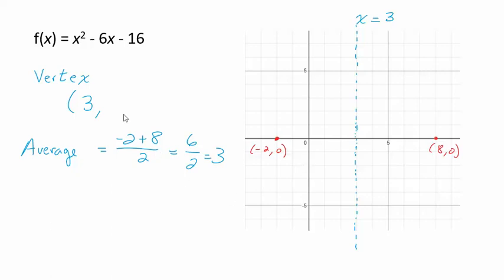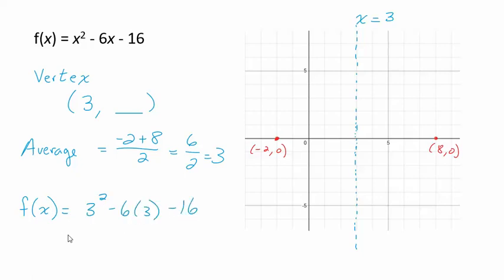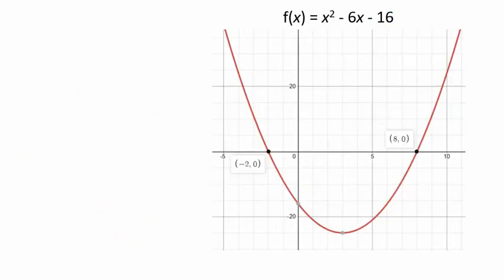Now how do we find the y-value of the vertex? Since we know the x-value is 3, we plug 3 into the function. We get 3 squared minus 6 times 3 minus 16, which equals 9 minus 18 minus 16, or negative 9 minus 16, which is negative 25. So the vertex is at (3, negative 25). Here it is on the graph — over 3 and down 25.